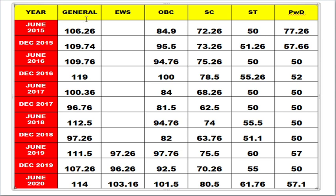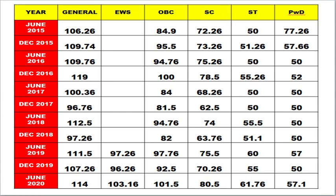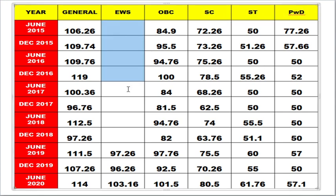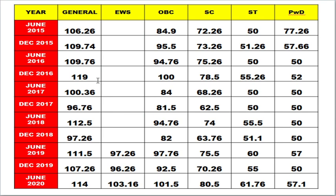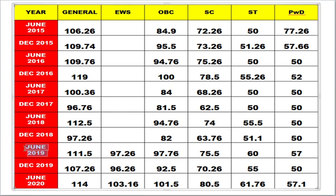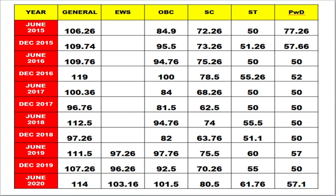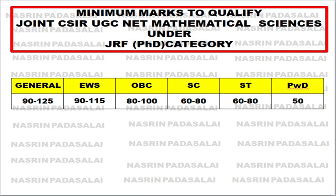When compared to the General category, OBC candidates will have a slightly lesser cutoff — around 10 to 12 points lower. General, EWS, and OBC categories will show varying cutoffs. The EWS category is blank in some years because it came into force only from the June 2019 examination onward, which is why some earlier data is missing. I have prepared this detailed analysis specifically for what is the minimum mark to qualify the CSIR UGC NET examination under the JRF category.